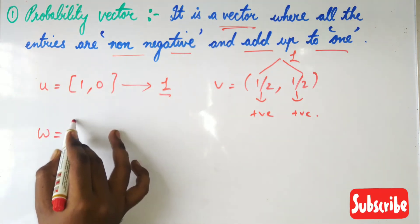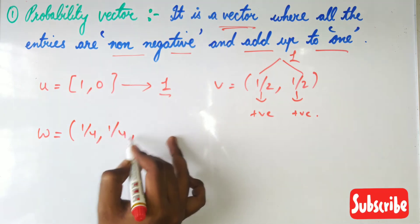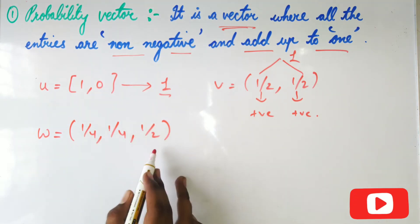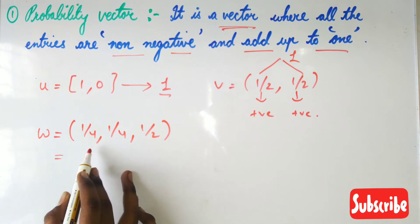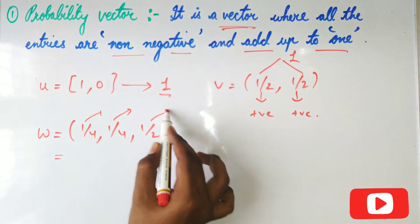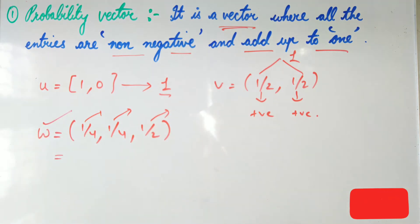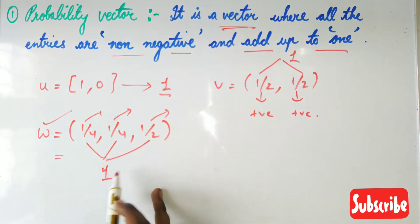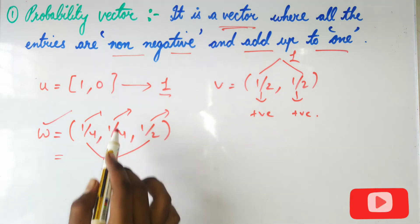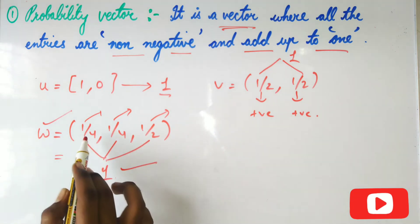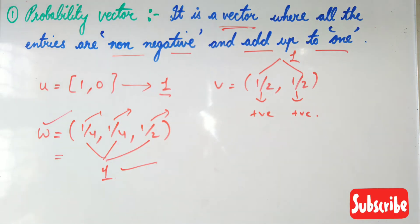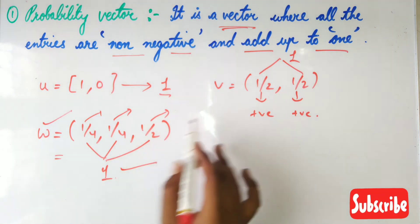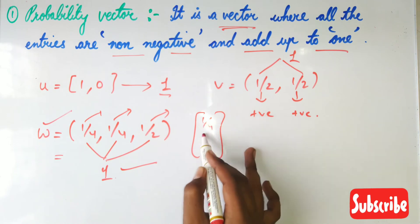One more example: w = (¼, ¼, ½). Here all three entries — the components of the vector — are positive. Adding them: ¼ + ¼ + ½ = 1. The numbers are positive and their sum equals one. This is in matrix form with a single row. You can also consider it as a column vector with entries ¼, ¼, and ½.